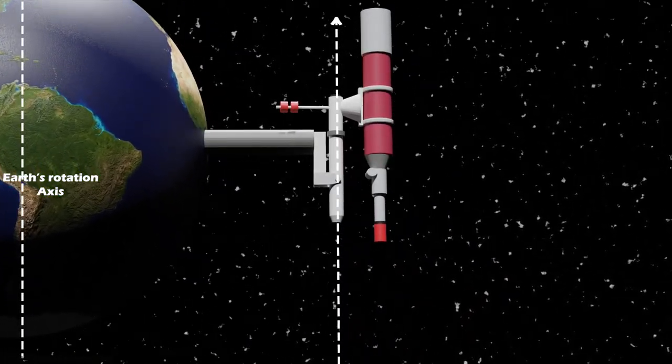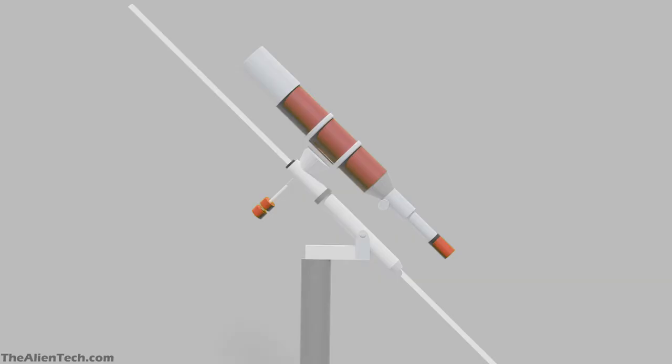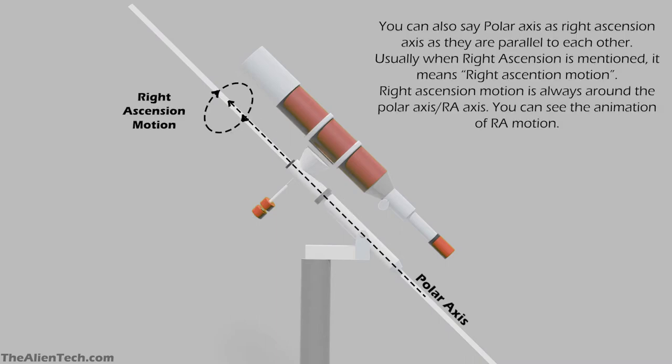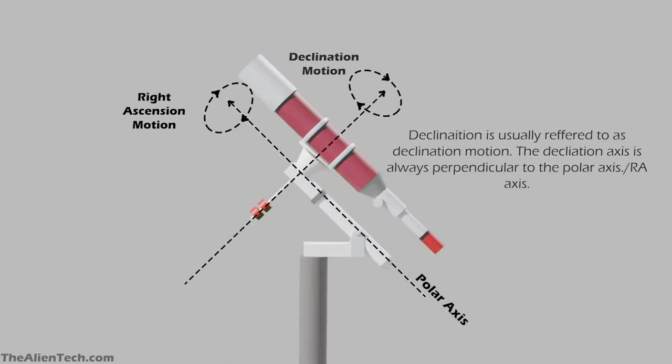Out of the other two axes, one is right ascension (R.A.) which is parallel to the polar axis and rotates around the polar axis. The second is the declination (D.A.) axis which is perpendicular to the polar axis.